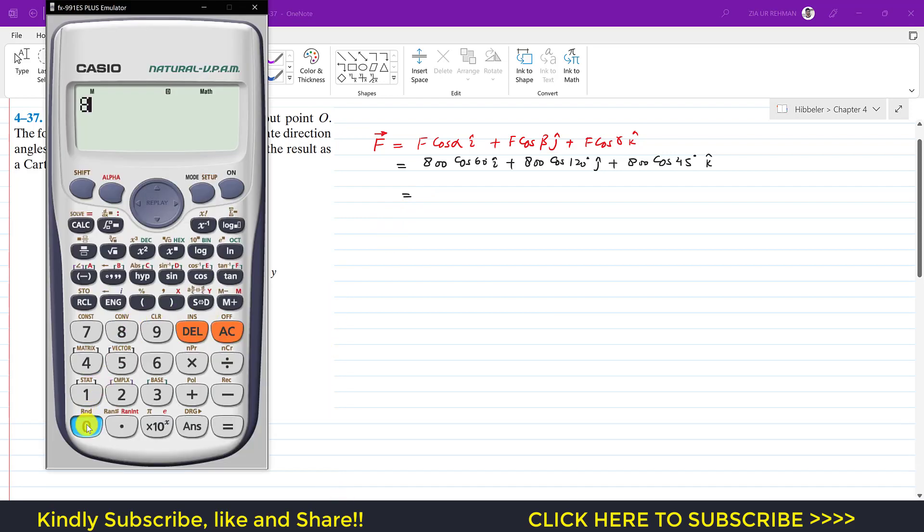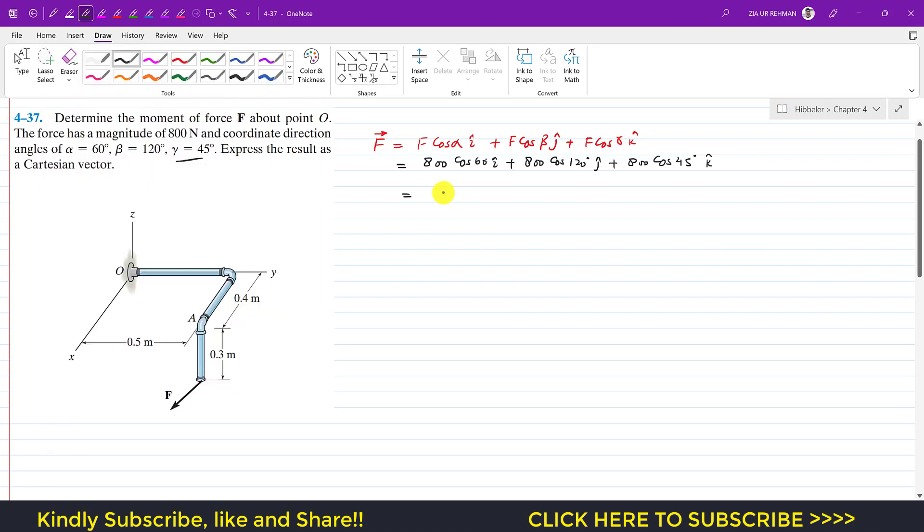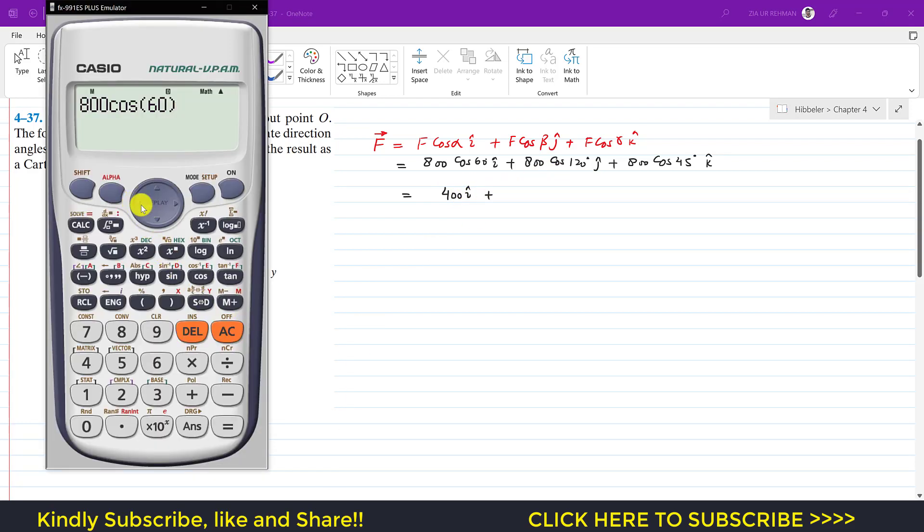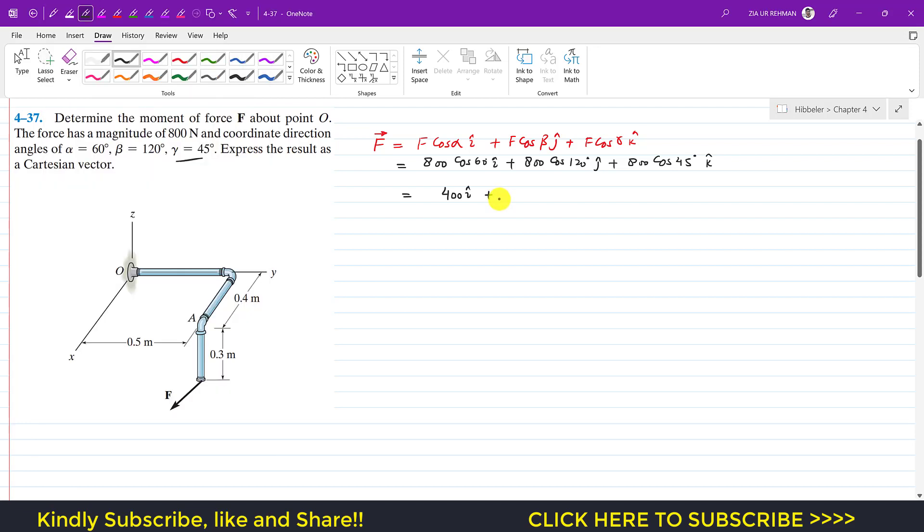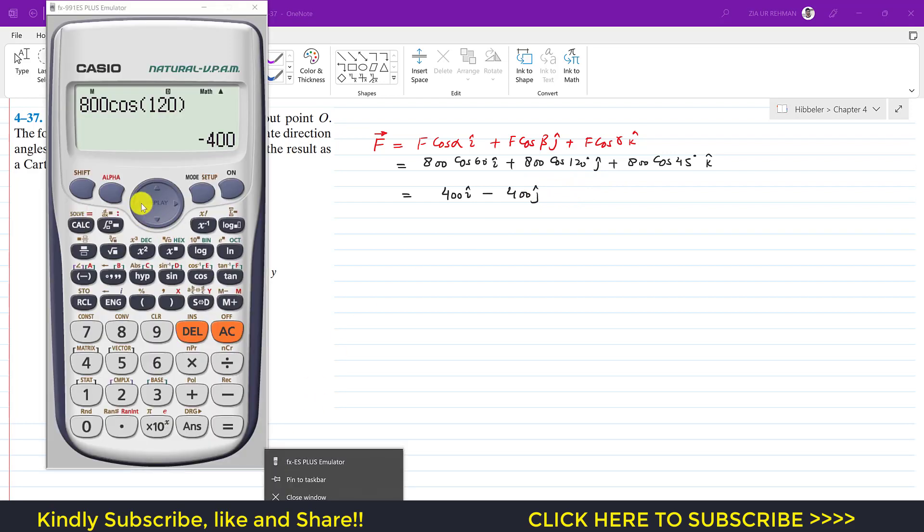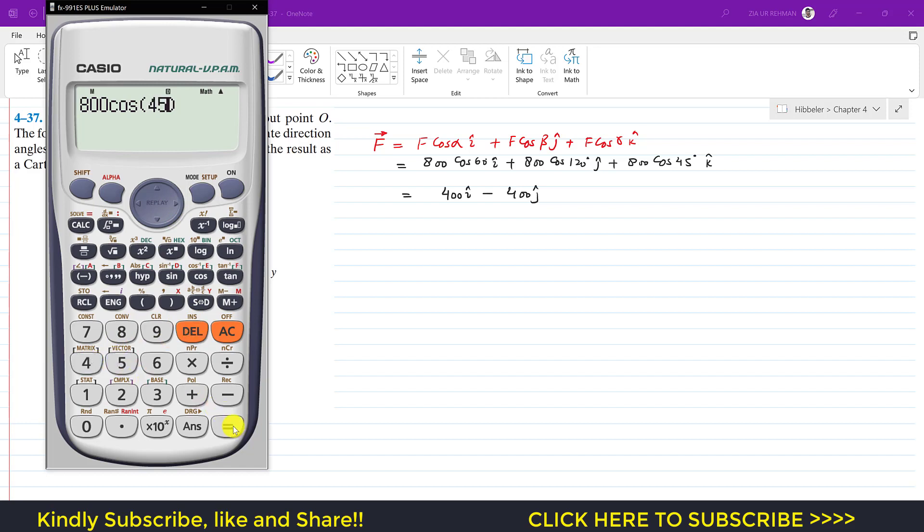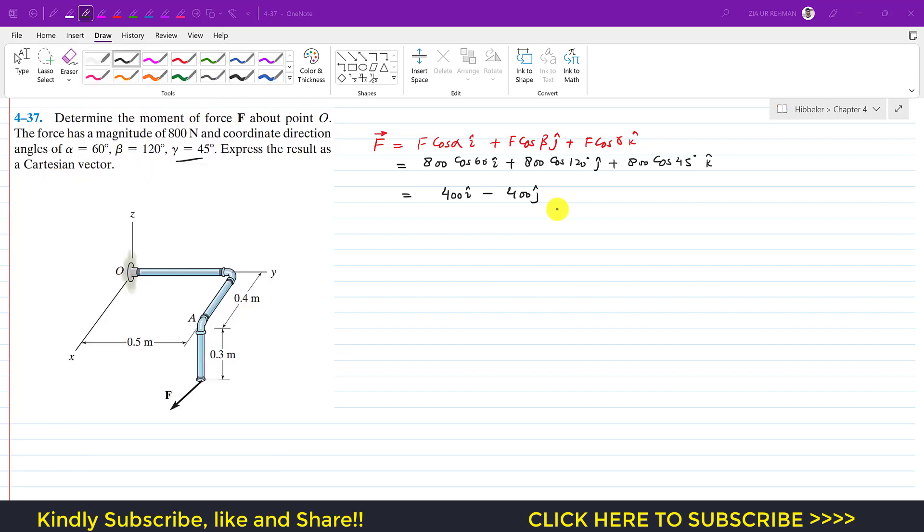So 800 cos(60) gives us 400i. 800 cos(120) gives us minus 400, so this is minus 400j. And then 800 cos(45) is 565.68, or we can say approximately 566, so this is plus 566k.